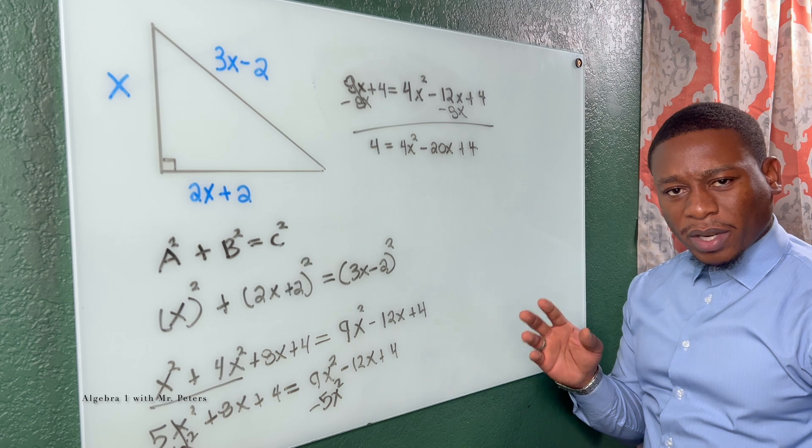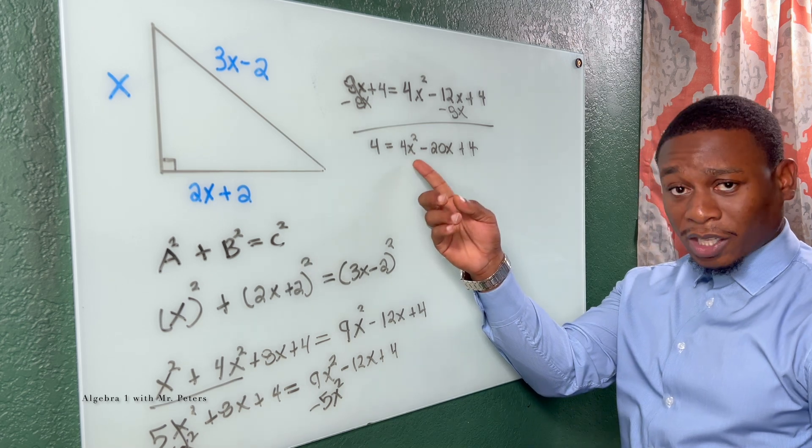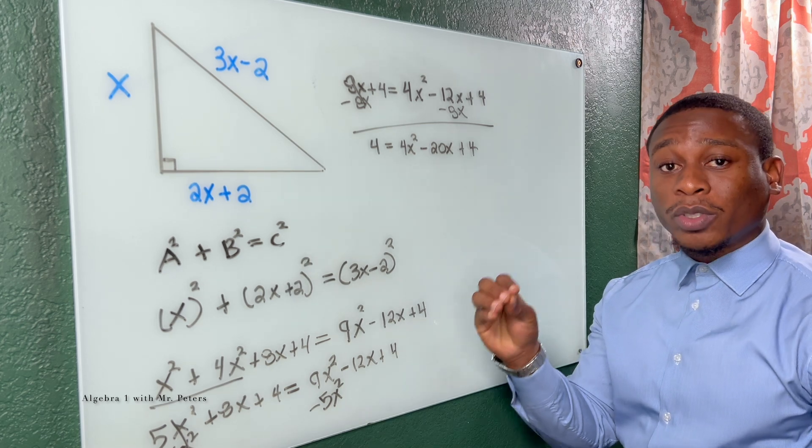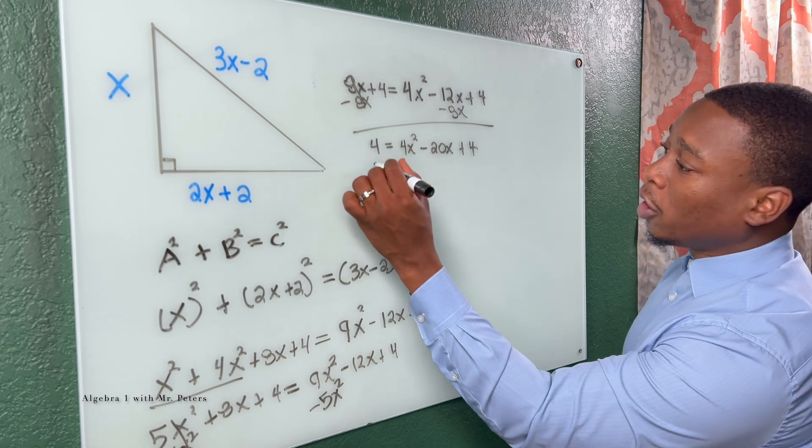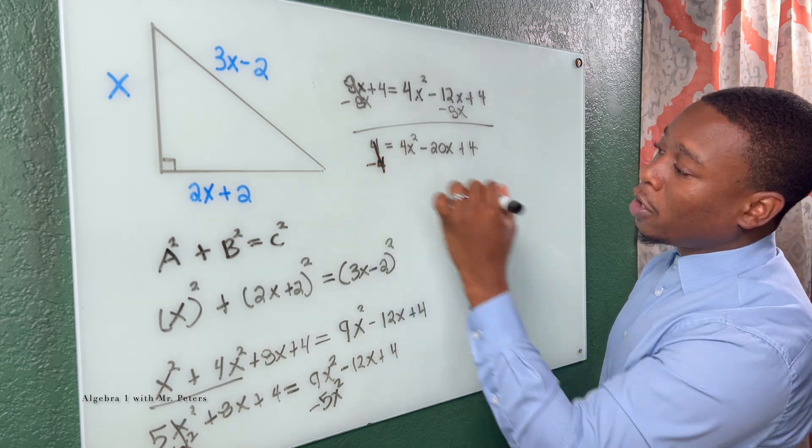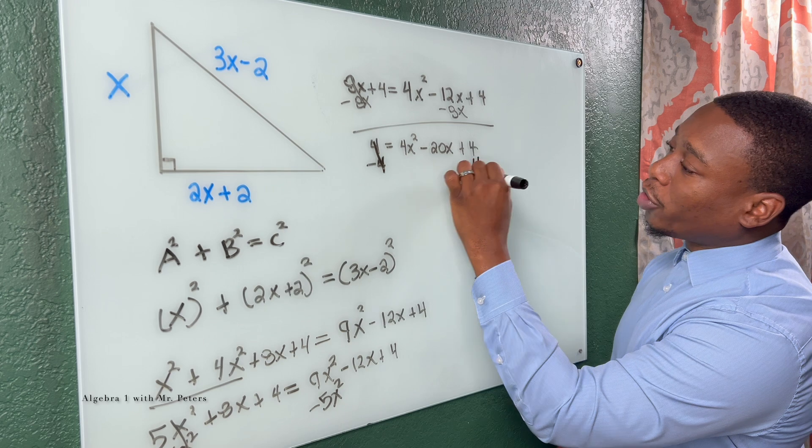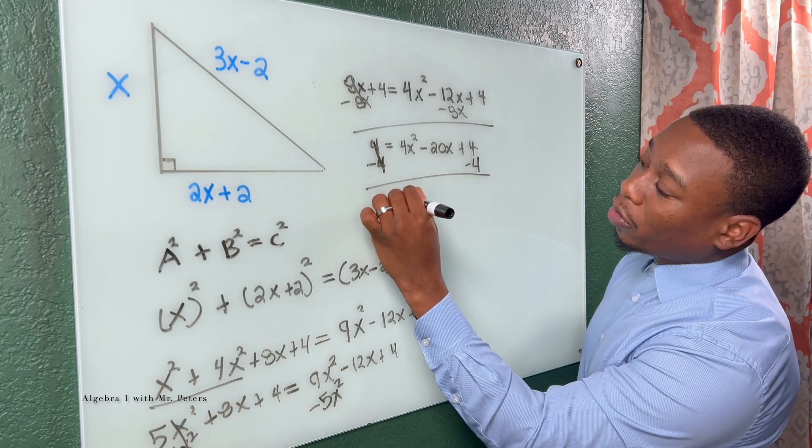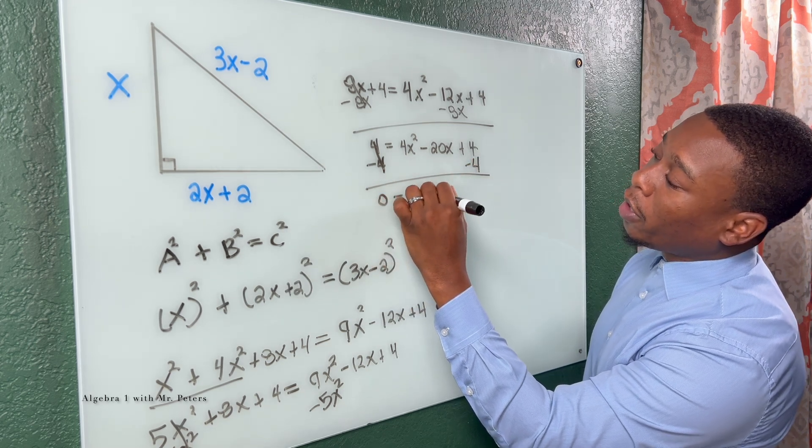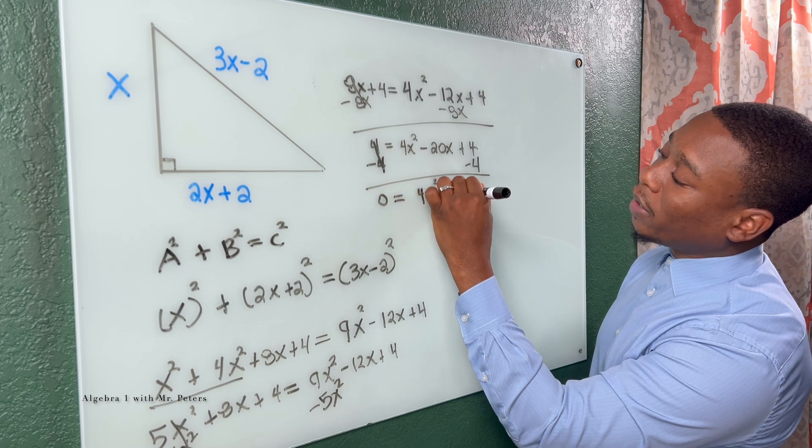So we have 4 is equal to 4X squared minus 20X plus 4. And just remember at this point of the equation, we have a quadratic equation. We're trying to set it equal to 0 so we could solve because we're going to have to factor to solve. Subtract 4 from both sides.